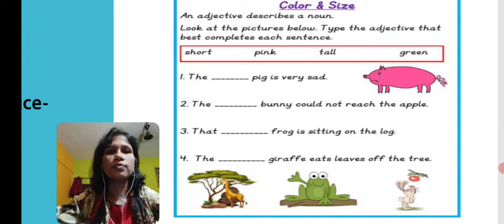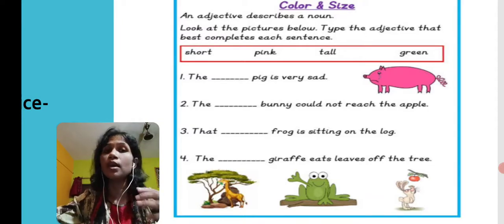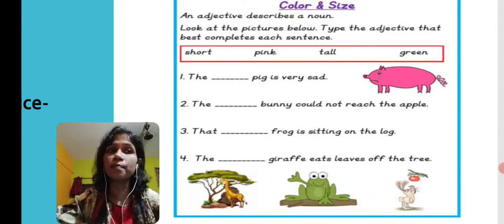Number one: The blank pig is very sad. You can see there is a sad pig given in this picture and we have to mention the color of the pig. What is the color of the pig? Yes, the color of the pig is pink. The pink pig is very sad.